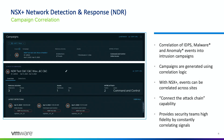Campaign correlation is the key feature of what we do with NDR — taking all individual signals, these atomic events from IDS/IPS, malware, and NTA, and correlating them into a scored and actionable campaign using correlation logic. The correlation rules are complex, but with NSX Plus these events can be correlated across sites. We also provide a connect-the-attack-chain capability — a visualization of how the attack unfolded from initial access all the way to exfiltration.